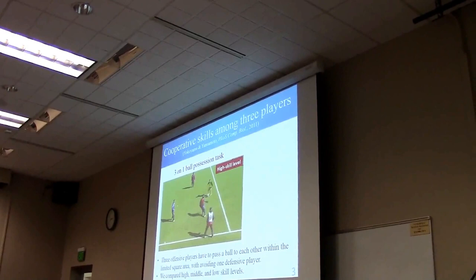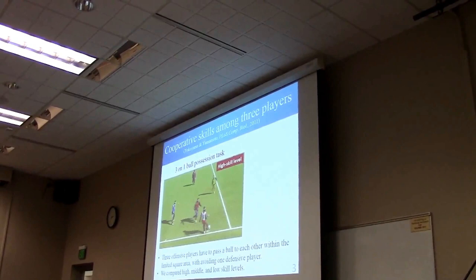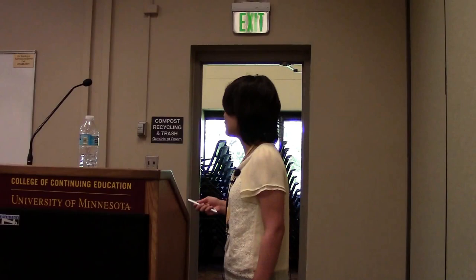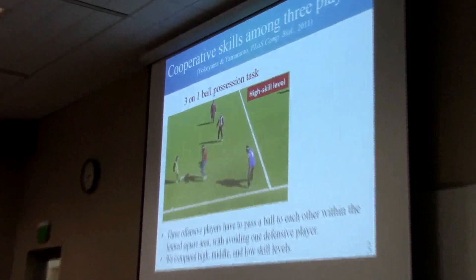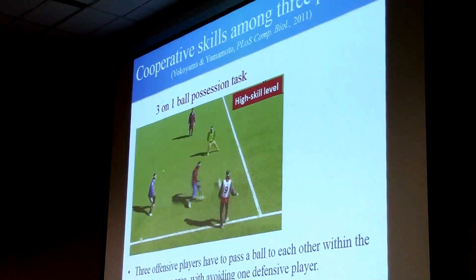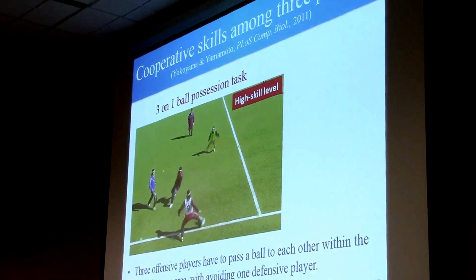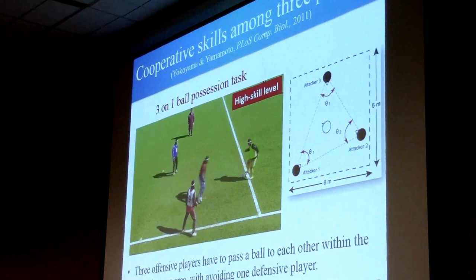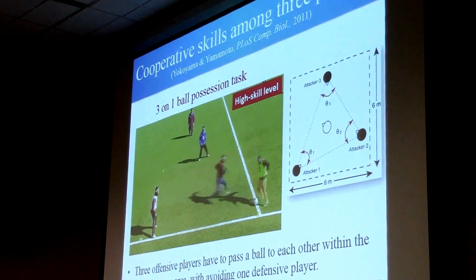In a previous study, we investigated the dynamics of cooperative skills using a three-on-one ball possession task in soccer. In this task, three offensive players have to pass a ball to each other within a limited square area, while avoiding one defensive player. We compared high, middle, and low skill levels. To clarify these cooperative skills, we analyzed three angles of the triangle constructed by the positions of the three offensive players.